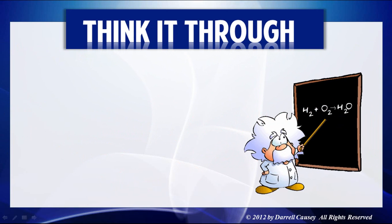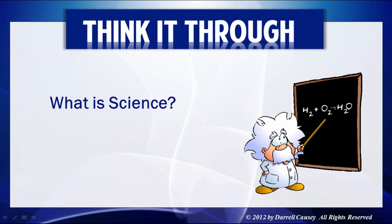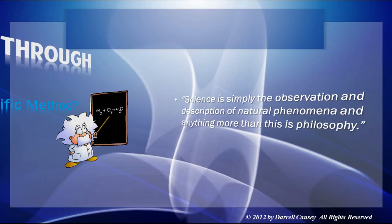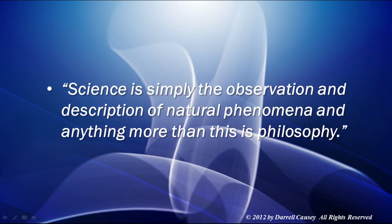Thinking it through, you should be able to answer: what is chemistry? What is science? You should be able to explain and describe the scientific method and its process. Look forward to a future video where we'll talk about the experimental process, which is an extrapolation on the experiment. And remember, science is simply the observation and description of natural phenomena — anything more than this is philosophy.